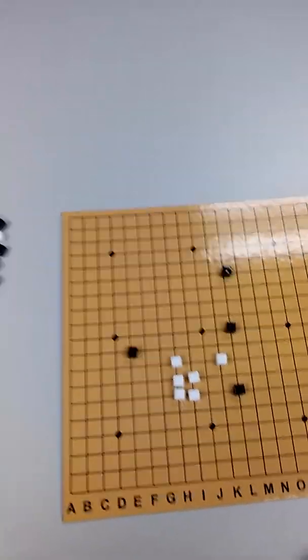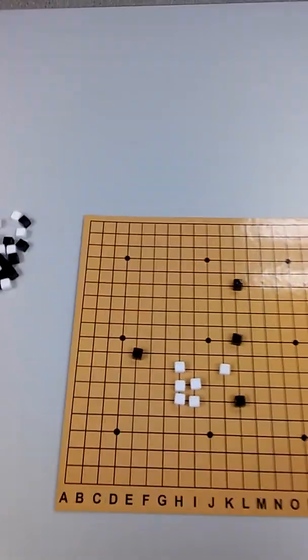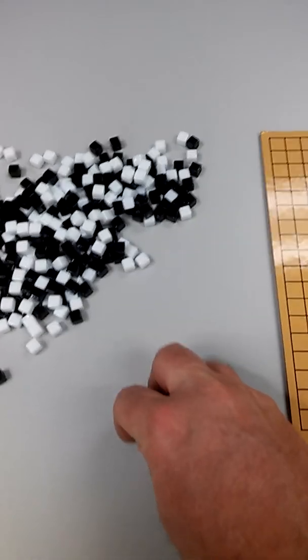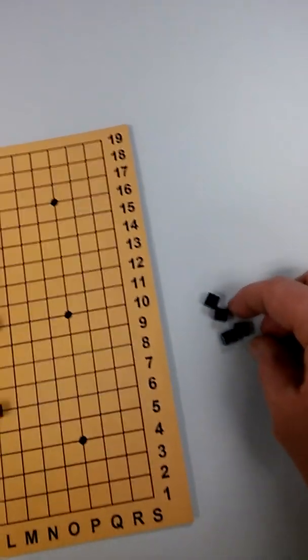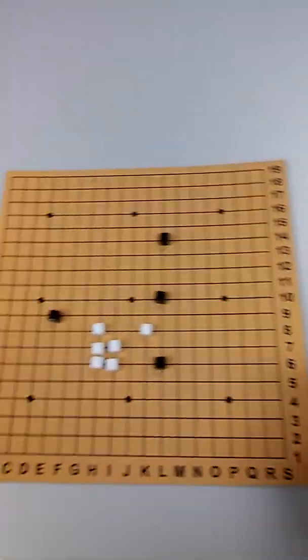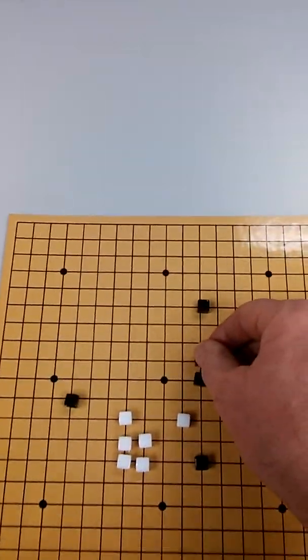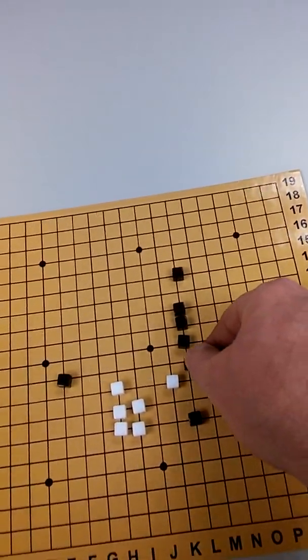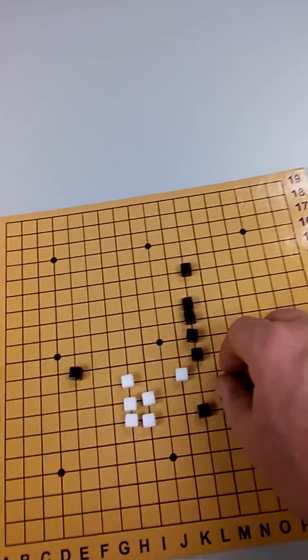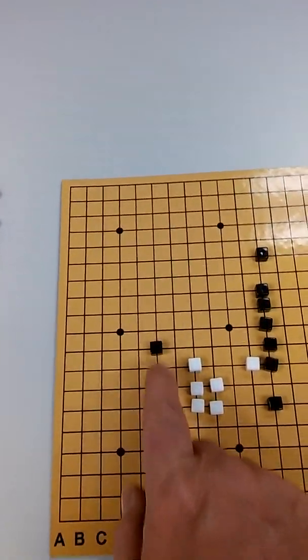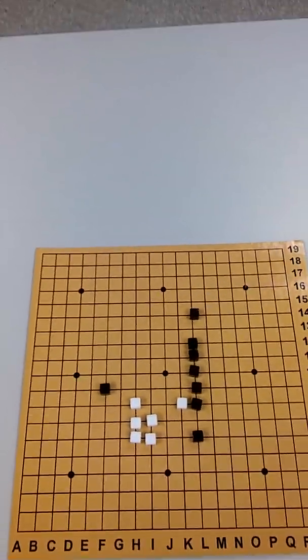So then black might now do something like this again. And then setting them off to the side, then let's say black places here, here, here, here, and here. Let's say black brings this closer to white's encampment like that. So there's the game so far.